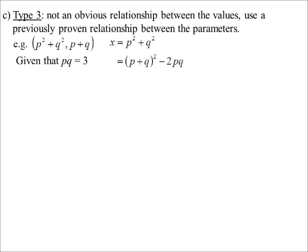But let's have a look at it. x is p squared plus q squared, which we know is p plus q all squared minus 2pq. And therefore I get x is, well the y was p plus q, but I still have this pq. And that's where I use the other relationship that I proved in the problem, that pq equals 3. Sub that in, and I've got x equals y squared minus 6. So the third type, there's not an immediate obvious relationship. You might have to use some other relationship that you've probably previously proven in the problem.